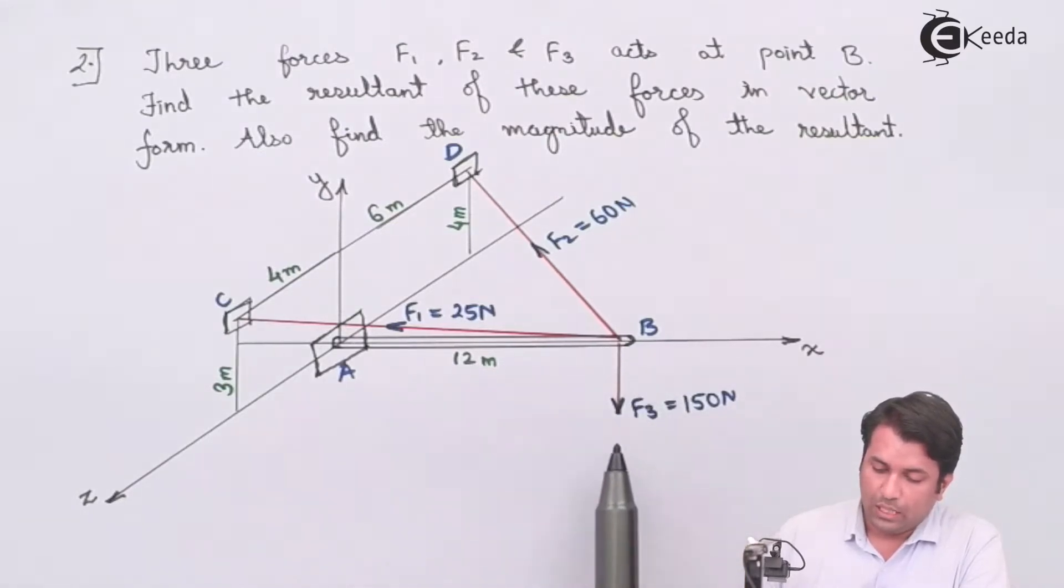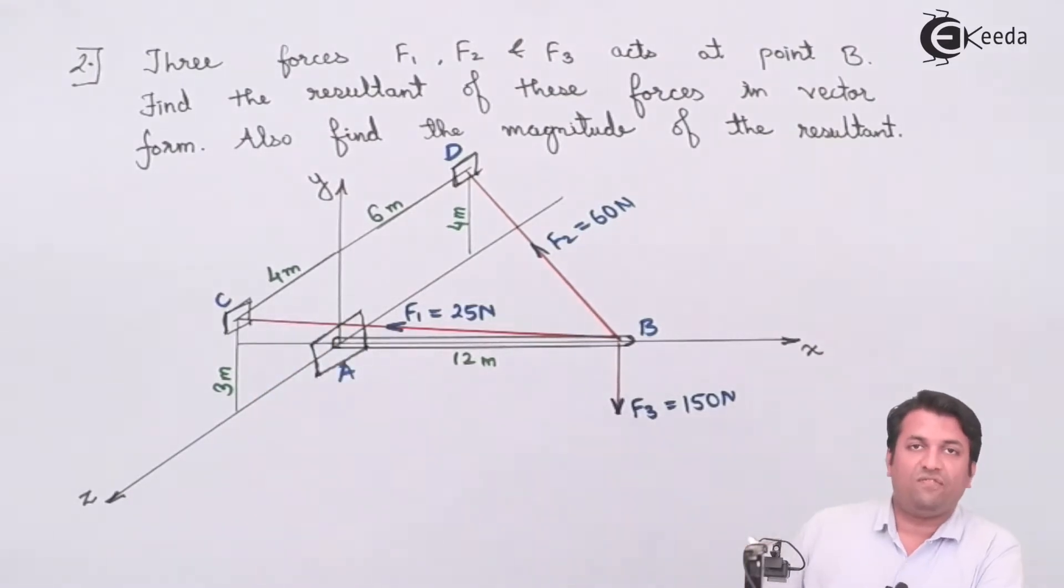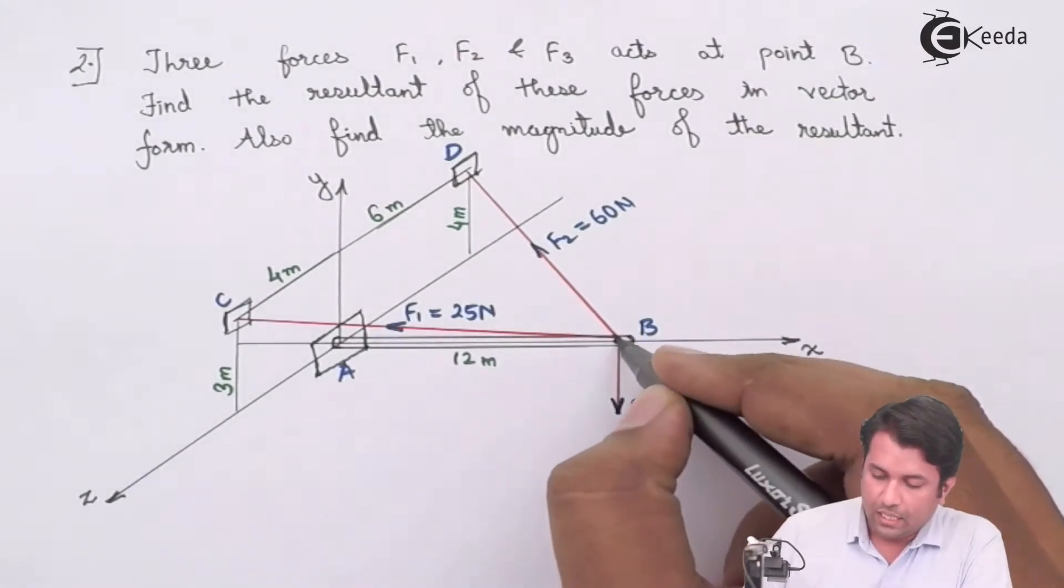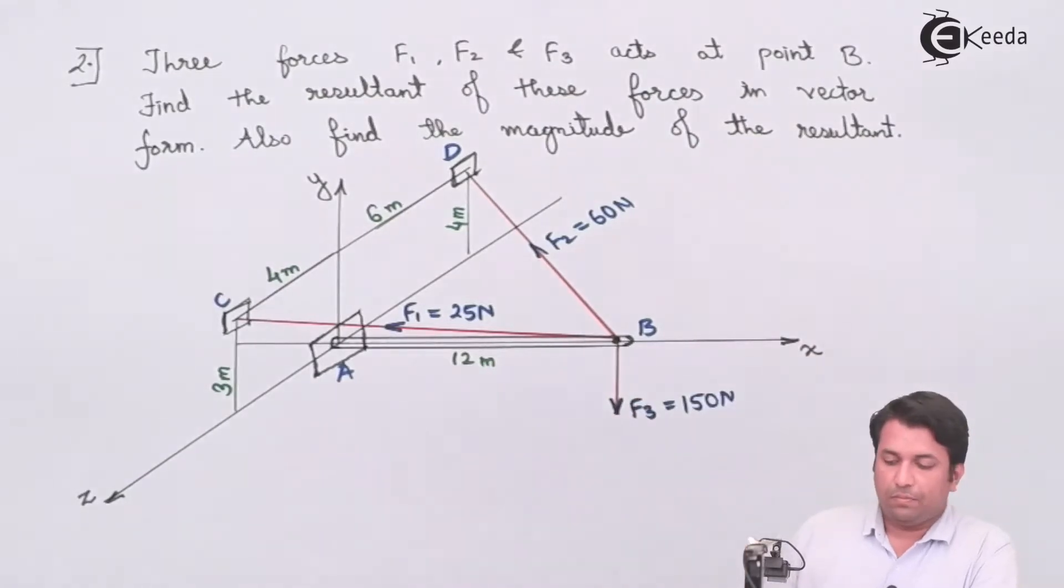The force acting at B is acting vertically downward, parallel to the Y axis, with a magnitude of 150 Newtons. Now I need to find the resultant acting at point B.